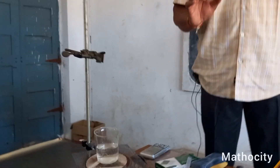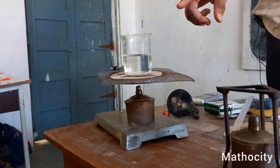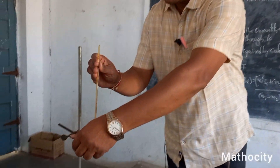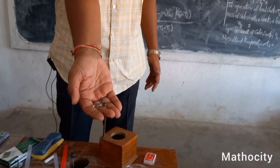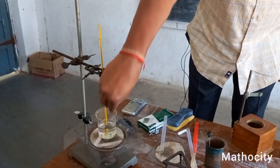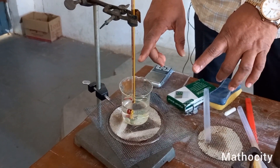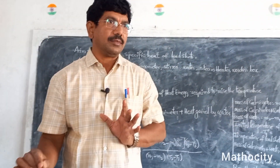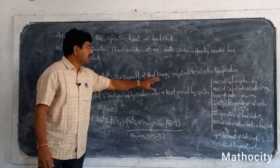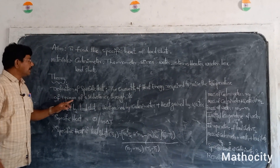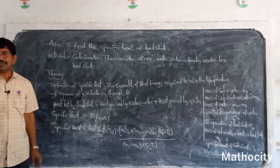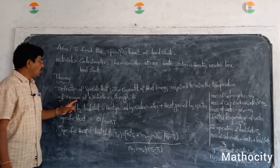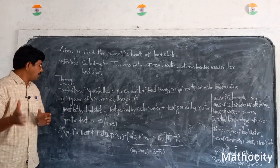I have taken some water in another beaker and I am heating it to a temperature of 100 degrees. Let us wait for some time. What is the definition of specific heat? The quantity of heat energy required to raise the temperature of 1 gram of a substance through 1 degree centigrade.